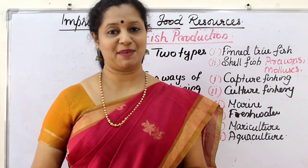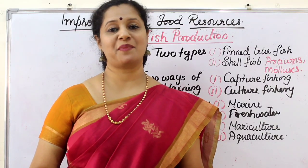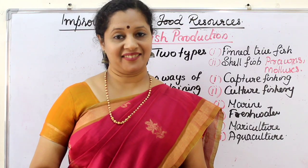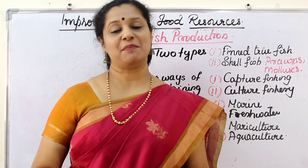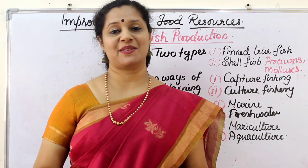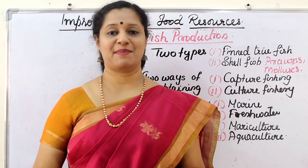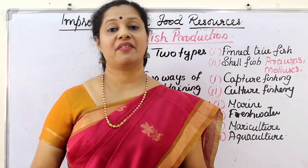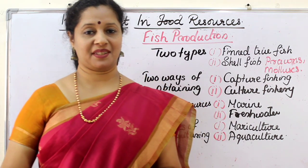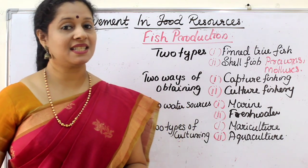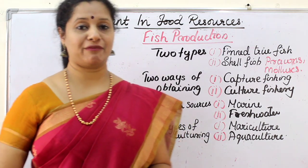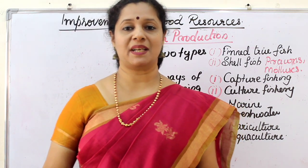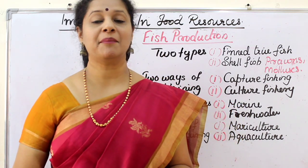Welcome to Biology My Passion. I am Soumya Harikrishna. We will continue with improvement of food resources — animal husbandry. Today let us discuss fish farming. Fish is the cheapest source of protein — animal protein — which is better than plant protein.